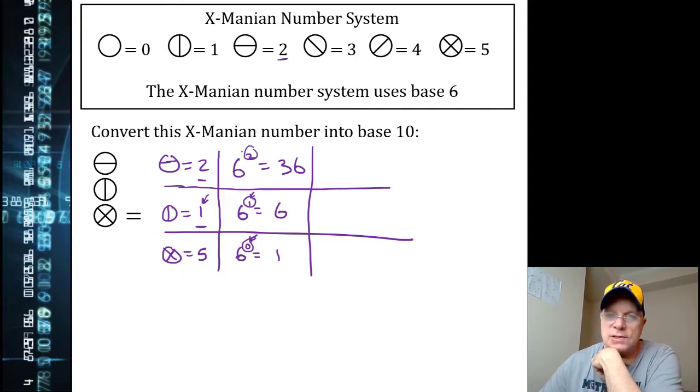These exponents are just the place value. 6 to the zero is one, 6 to the first is the sixes, 6 to the second is the thirty-sixes. I could have three over here or four over here. It just tells me how many thirty-sixes I have.